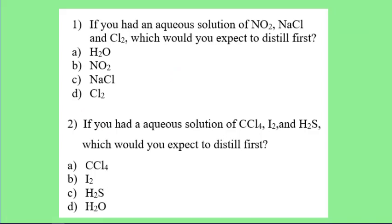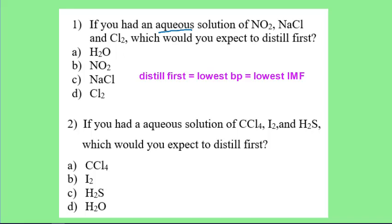If you had an aqueous solution of NO2, NaCl, and chlorine, which would you expect to distill first? The one that distills first has the lowest boiling point, which means the lowest intermolecular forces. NO2 is polar, NaCl is ionic, and chlorine is LDF. Because it's an aqueous solution, water is also an option. Of those four, chlorine would be expected to have the lowest intermolecular forces.